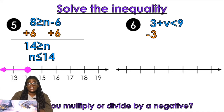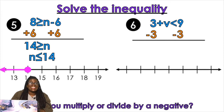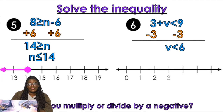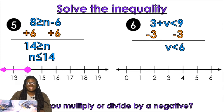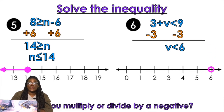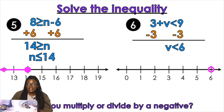Three plus V is less than nine. Subtract three from both sides, and bring down V is less than six. Open circle or closed circle? Open circle. Left or right? Left.